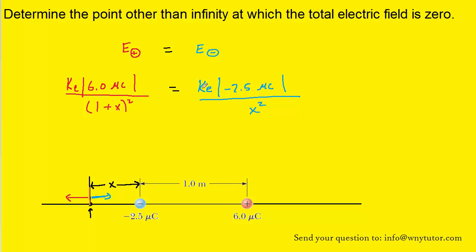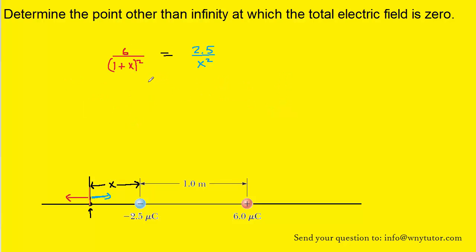The k appears on both sides of the equation so we can eliminate it, and the microcoulombs cancel as well. After taking the absolute value of negative 2.5, we apply a useful trick: when a fraction equals a fraction and both sides involve squaring, we can take the square root of each numerator and denominator. The square root of x² becomes x, and the square root of (1+x)² becomes 1+x. The square root of 6 and the square root of 2.5 are evaluated with a calculator.